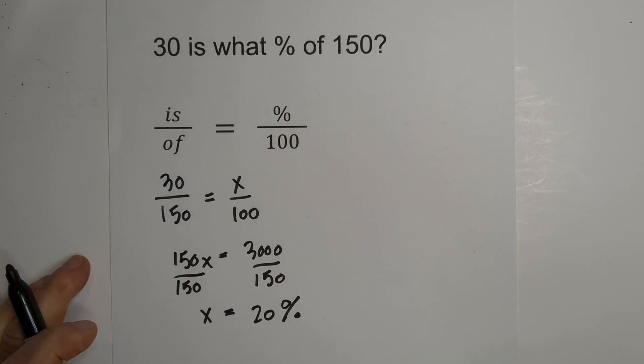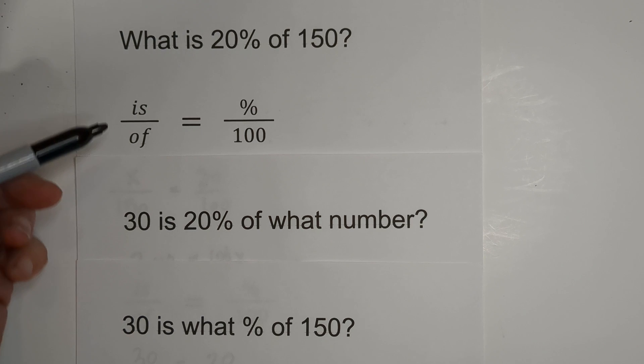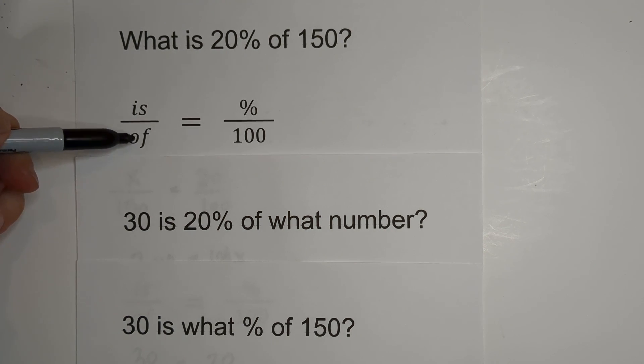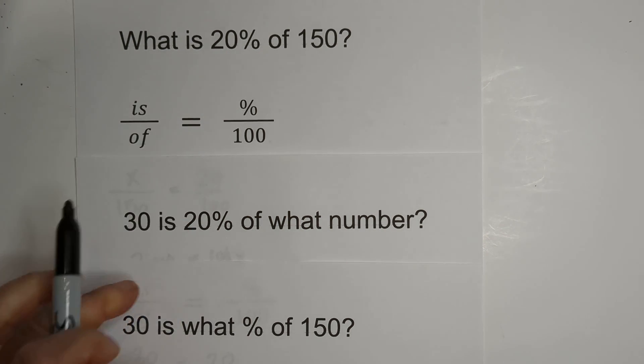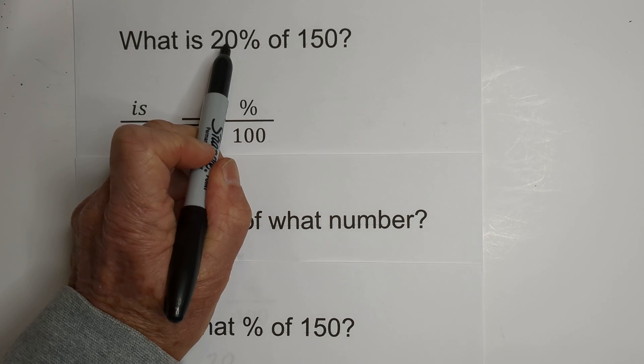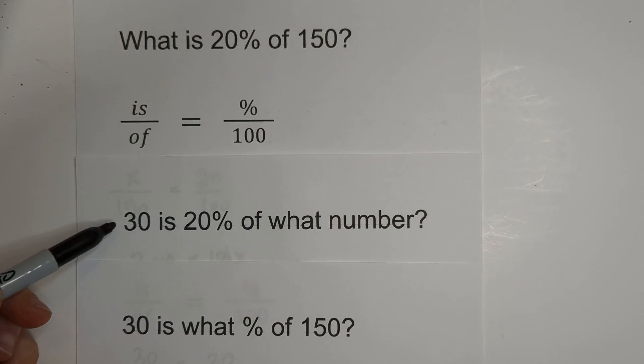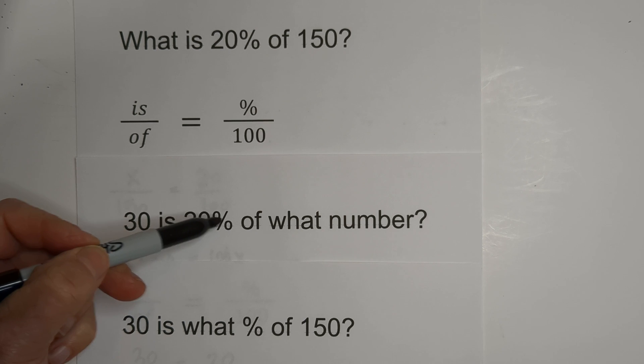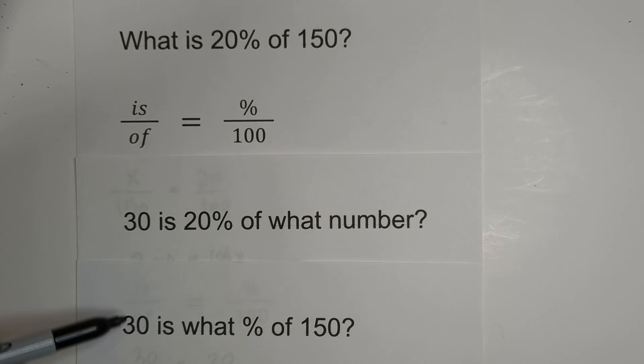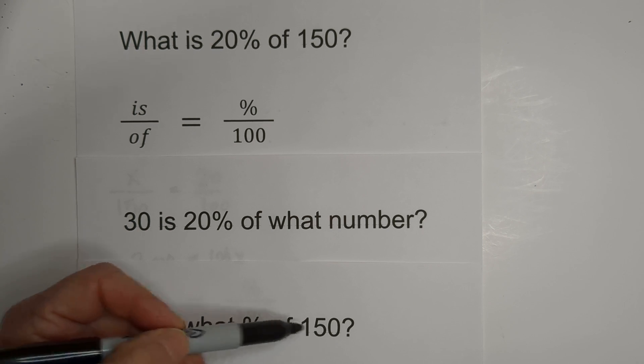In summary we were able to use is over of equals percent over 100 for what is 20 percent of 150, 30 is 20 percent of what number, and 30 is what percent of 150.